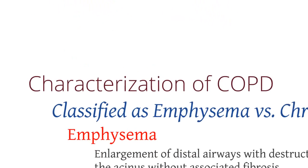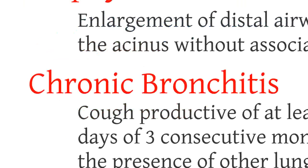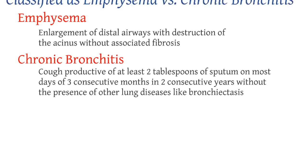We can further characterize COPD patients as either having emphysema or chronic bronchitis. Emphysema is enlargement of the distal airways with destruction of the tissue without associated fibrosis — essentially a thinning of the distal airway tissue — and you can measure this by looking at the DLCO on pulmonary function tests. Chronic bronchitis is when a patient has a cough productive of at least 2 tablespoons of sputum on most days of 3 consecutive months in 2 consecutive years, without the presence of other lung diseases like bronchiectasis. These are important characterizing features as they can help change management.